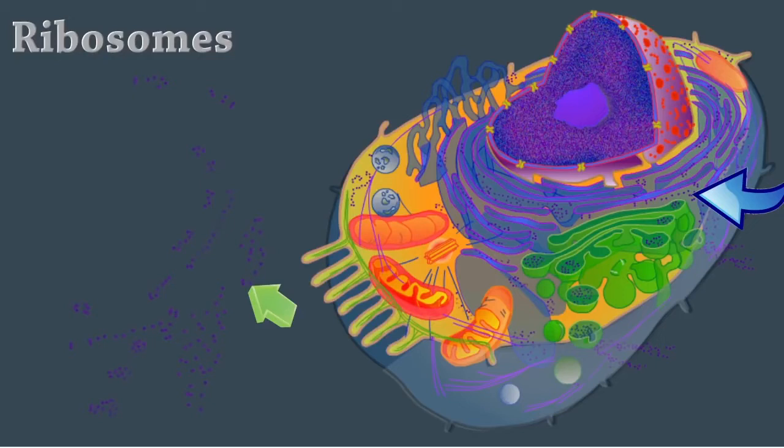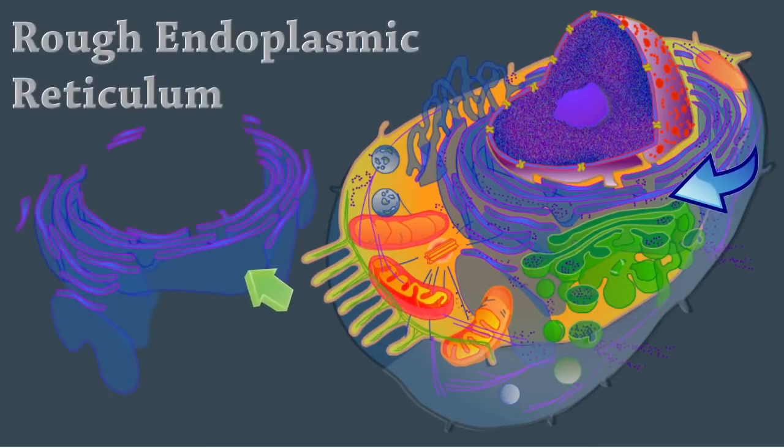The rough endoplasmic reticulum membrane system encloses a cavity, the cisterna, and coils through the cytoplasm. It's externally studded with ribosomes. Sugar groups are attached to proteins within the cisternae. These proteins are bound in vesicles for transport to the Golgi apparatus and other sites. The external face synthesizes phospholipids and cholesterol.